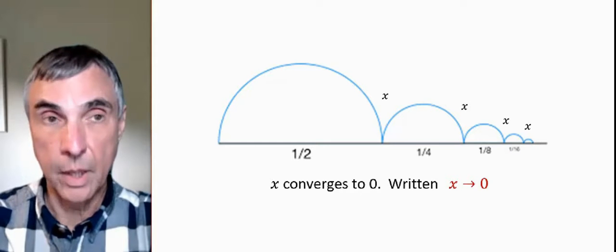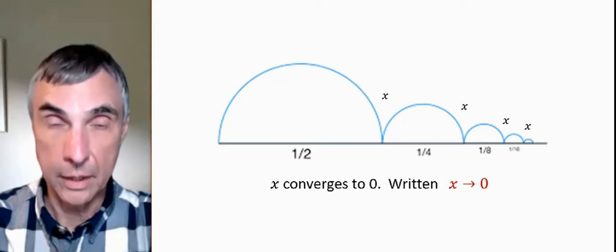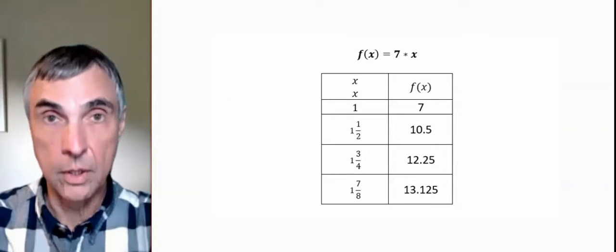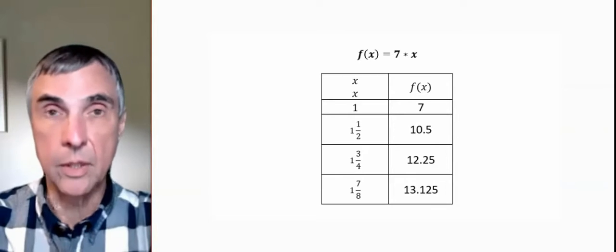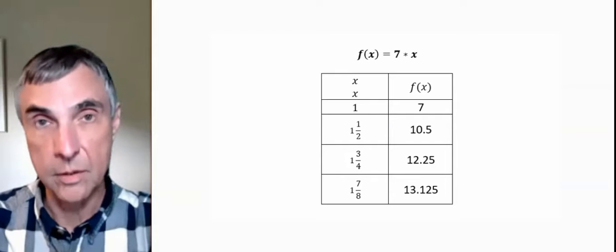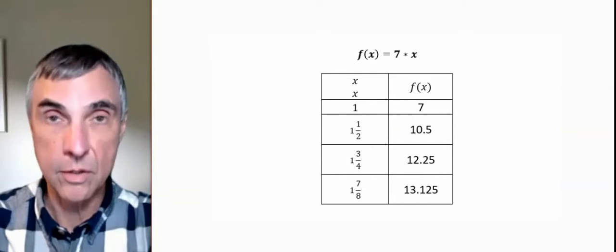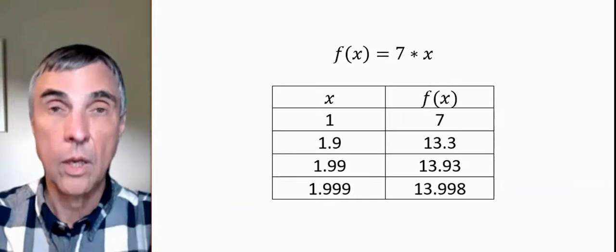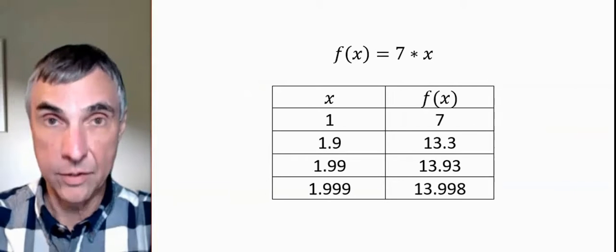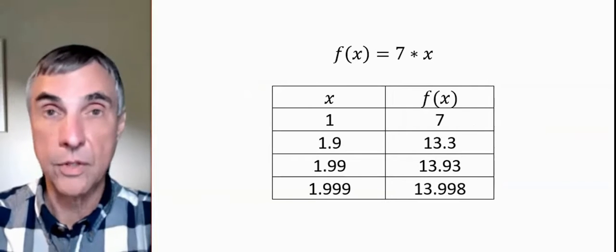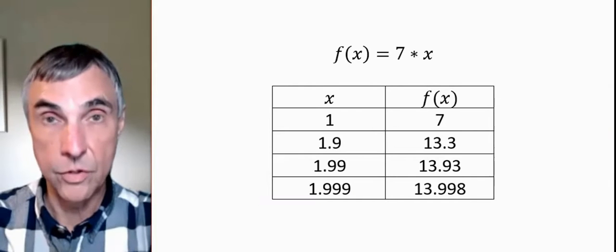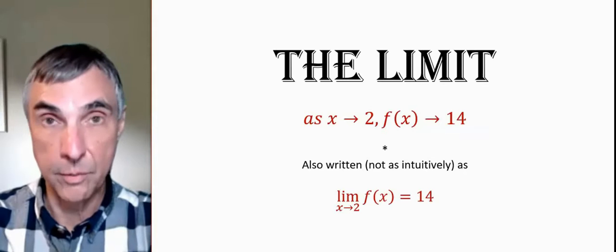Let's suppose x, let's call it x is converging to two. It's getting closer and closer to two. It's at one. It's at one and a half. It's at one and three fourths. It's at one and seven eighths. It's at one and fifteen sixteenths et cetera. It's getting closer and closer to two. Well, if we have a function of x let's call it f of x equals seven x, then as x converges to two, f of x converges to fourteen. So we say fourteen is the limit.